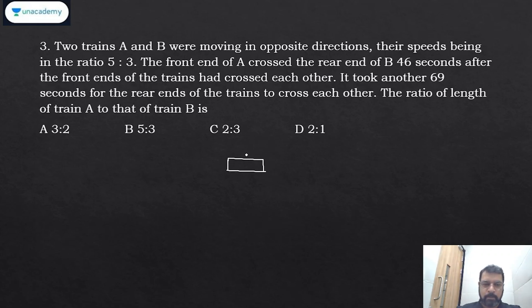Suppose this is A and this is B. Front end of A crosses the rear end of B in 46 seconds after the front ends of the trains cross each other. And it took another 69 seconds for the rear ends to cross each other.